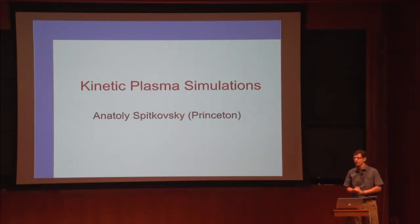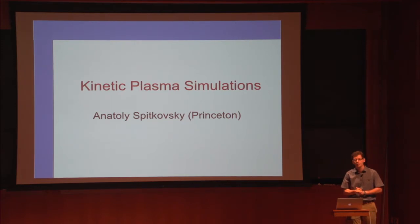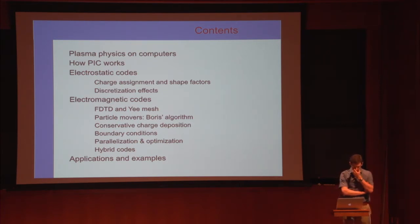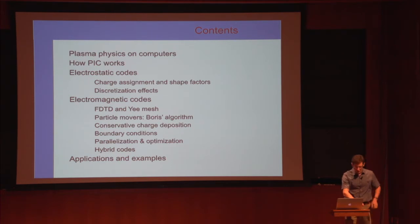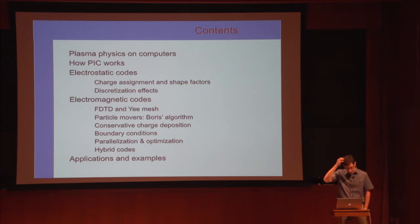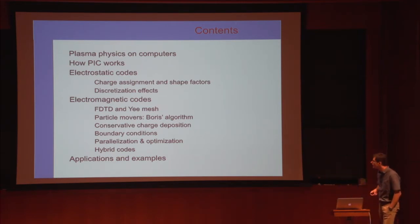This is the second lecture about particle-in-cell codes and kinetic simulations of plasmas. Last time we went through the description of how electrostatic codes work and how we discretize the plasma on the grid using particles. We started discussing electromagnetic particle-in-cell codes, covering the integration of Maxwell's equations on the numerical grid and how we integrate particles using the Boris pusher. These coupled together give us a self-consistent system that can evolve both electromagnetic waves and particles.